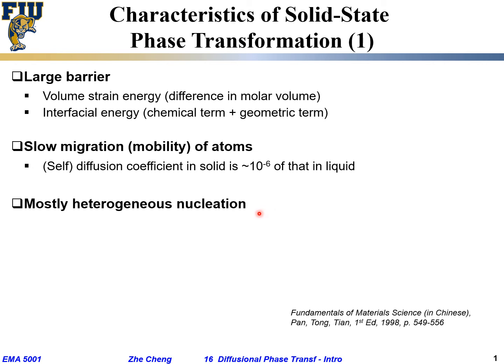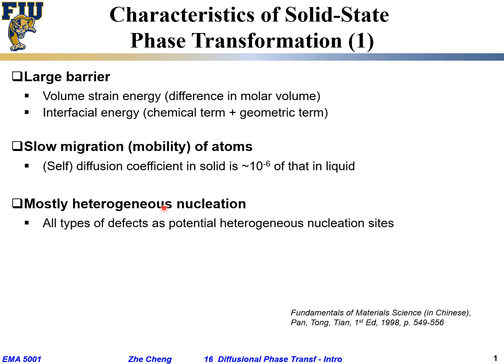For solid-state reactions, phase transformation in most cases occurs through heterogeneous nucleation, meaning the transformation occurs at specific locations that help lower the interfacial energy or reduce the strain energy. This is due to the fact that all types of defects exist within the solid and act as potential heterogeneous nucleation sites.